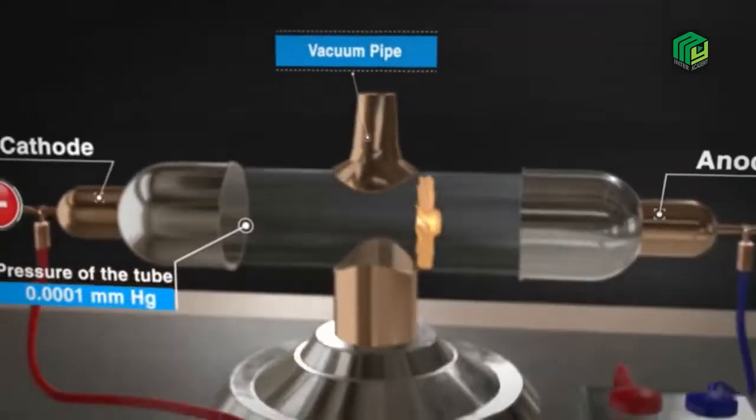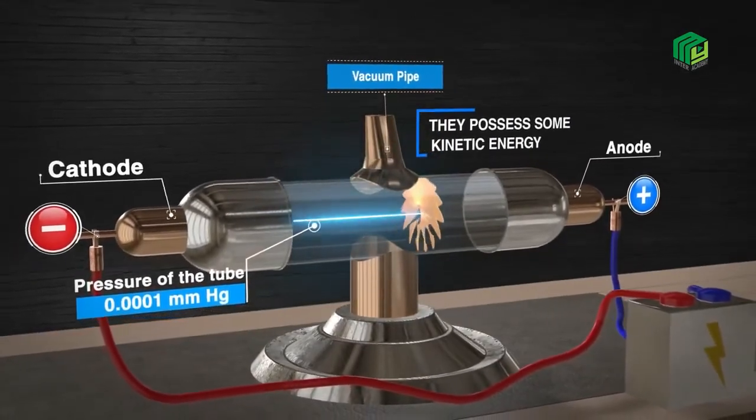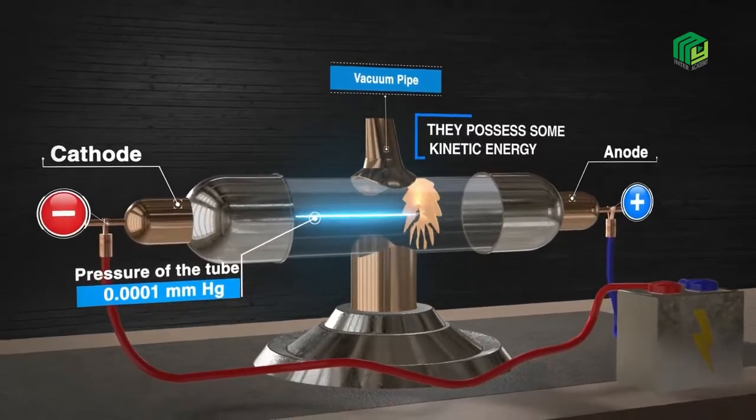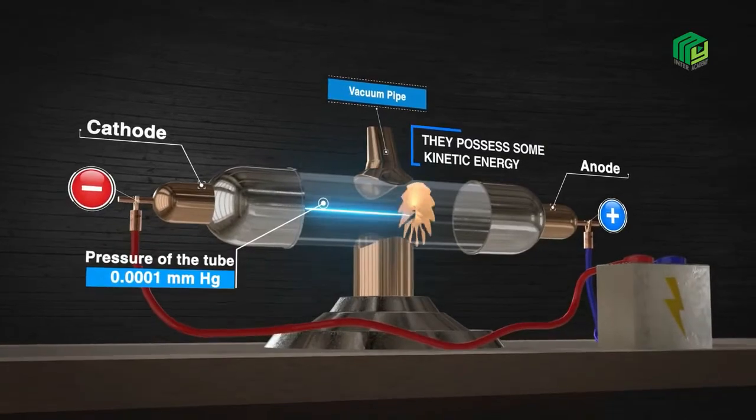Second, when a wheel was placed in the path of cathode rays, the wheel rotates. This shows that rays consist of particles and possess kinetic energy.